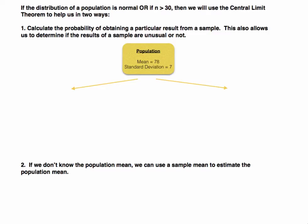Before we get into making calculations and calculating probabilities using the central limit theorem, I want to briefly give an overview — a big picture idea of how we're going to use it. The requirements tell us that if we're working with a population that we already know to be normal, or if our sample size is greater than 30, we can use the central limit theorem. In this course we're going to use it in two different ways.